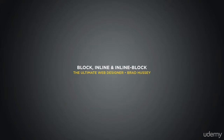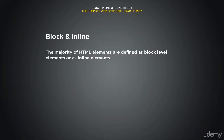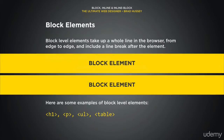The majority of HTML elements are defined as block-level elements or inline elements. A block-level element takes up a whole line in the browser from edge to edge within its container and includes a line break after the element. If you stack block-level elements in HTML they literally stack on top of each other, vertically, with a line break after each. Examples include the h1 heading, paragraph tag, unordered lists, and tables.